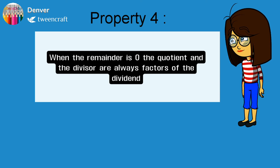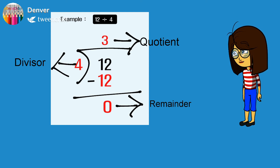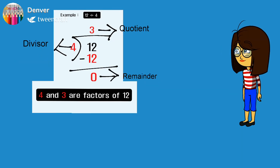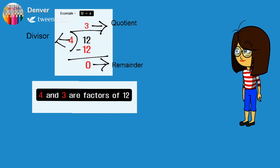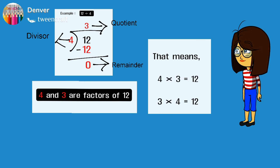Property four: when the remainder is zero, the quotient and the divisor are always factors of the dividend. Let us take an example where the remainder is zero. Twelve divided by four, where four is the divisor, three is the quotient, and zero is the remainder. Here, four and three are the factors of twelve, meaning four times three equals twelve, or three times four equals twelve.